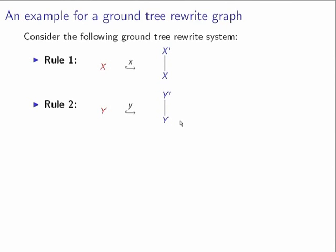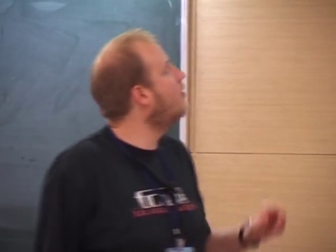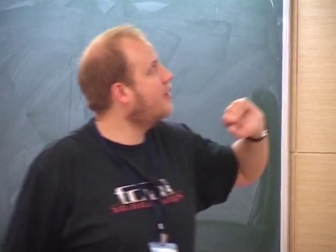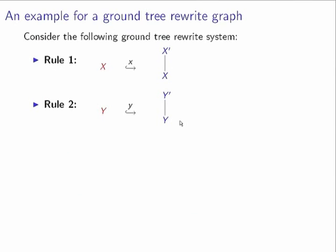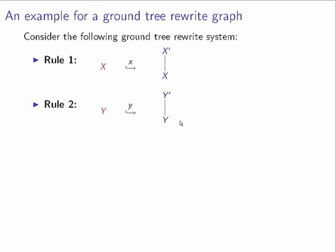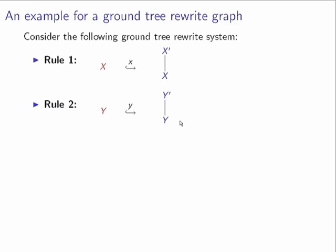The system is a finite set of rules. Assume we have a nullary symbol X, a unary symbol X', and the following rule: this rule rewrites a leaf X to a tree of size two. X' goes to X, and the same you do with Y. Now the question is what is the infinite transition system induced by this finite set. Assume we also have a binary symbol Z.